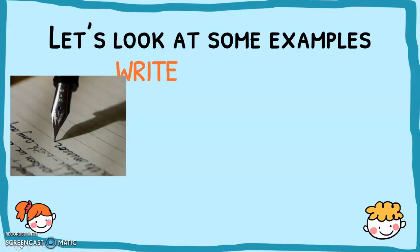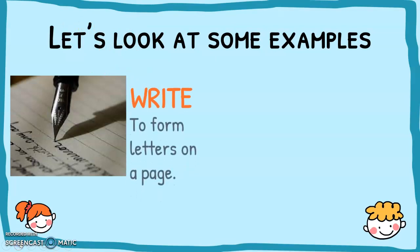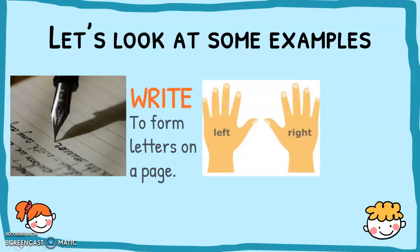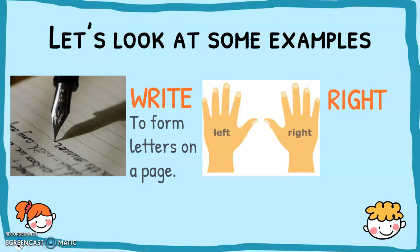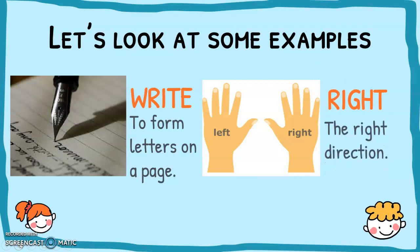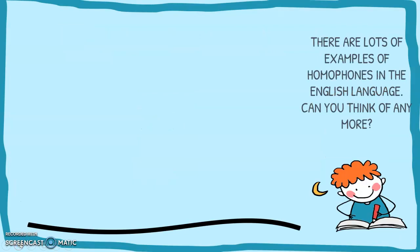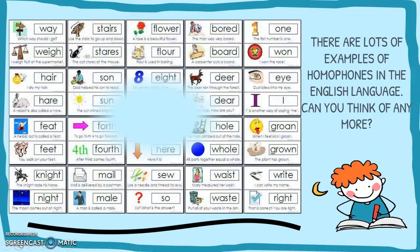Another one is 'write'. There are two different versions. You can write by forming letters on a page, or you can use your right hand, or go in the right direction. There are lots of examples of homophones in the English language.